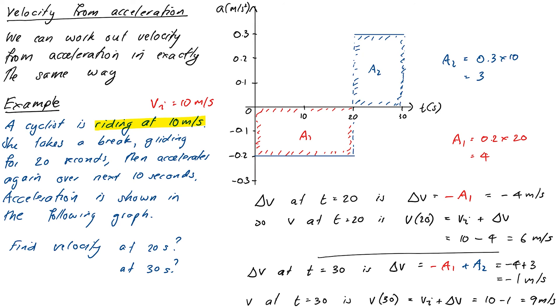In this video we explored how areas under graphs let us go backwards: calculating velocity from acceleration or displacement from velocity by working out signed areas between curves and the time axis. In our next video we'll use this to develop equations relating these quantities for situations where acceleration is constant — the kinematic equations. In the meantime, practice in your workshop, and we'll see you next time. Ka kite anō.